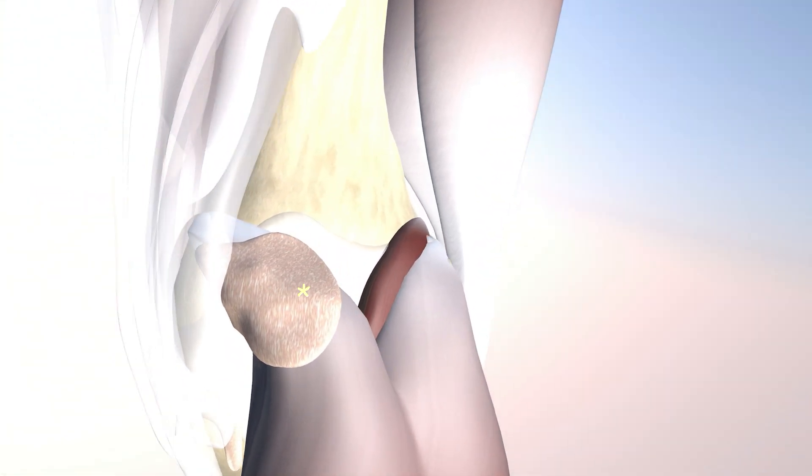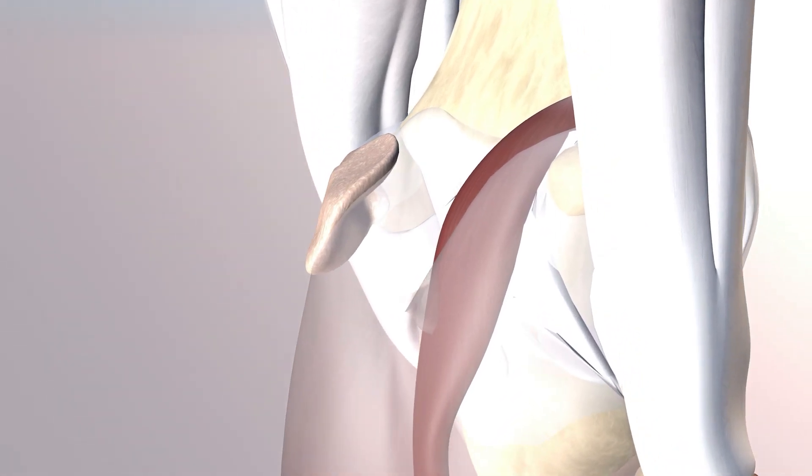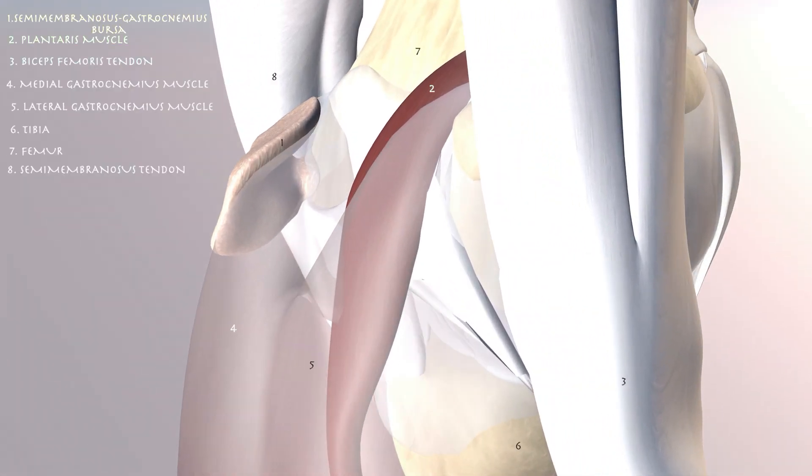Here we're looking at the semimembranosus medial gastrocnemius bursa or your typical popliteal cyst. You can see it basically just draping over the medial gastrocnemius muscle and tendon, concave lateral.